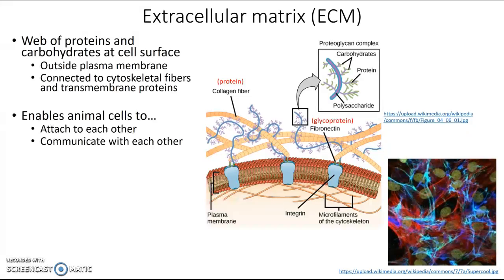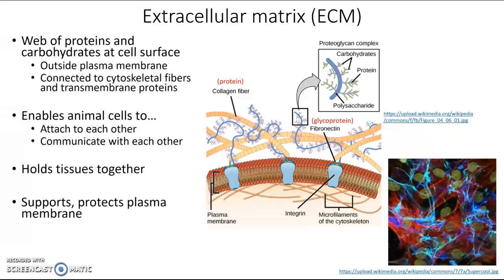In addition to that, the extracellular matrix helps hold tissues together. For example, if you think about your muscle cells, they're constantly getting pulled and pulling on each other, but rather than coming apart, the extracellular matrix is what holds them together so they can keep doing their job. One other thing the extracellular matrix does is support and protect the plasma membrane. So in multicellular animals, this matrix is doing all these different things for the cell.